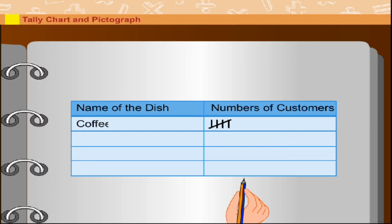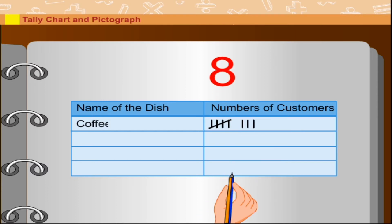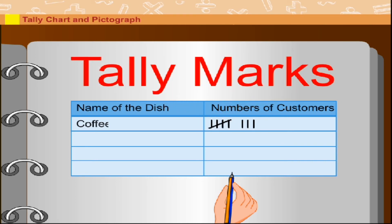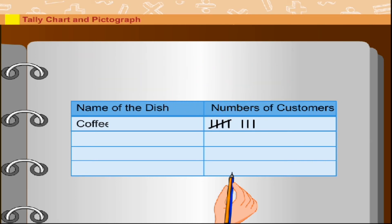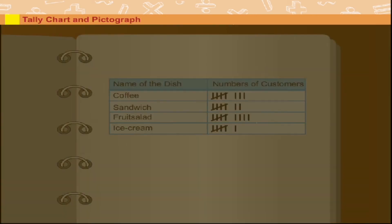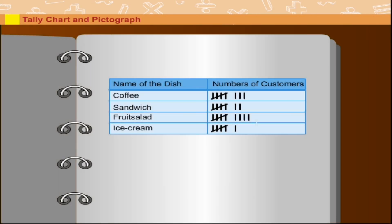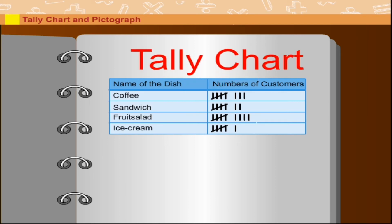He added three more vertical lines to show eight customers. These lines are called tally marks. Similarly, he drew the lines for the other items too. This is called a tally chart.